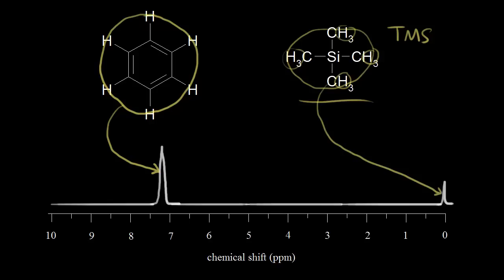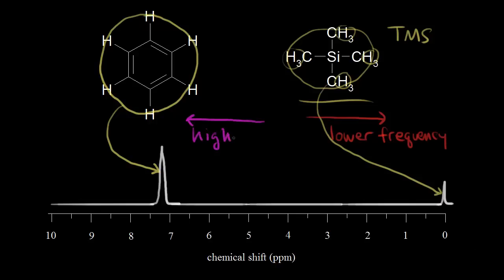In an earlier video, we said that as you go to the right on an NMR spectrum, you're talking about a lower frequency signal. And if you move to the left on an NMR spectrum, you're talking about a higher frequency signal. So the protons on benzene have a higher frequency signal than the protons on TMS.